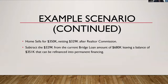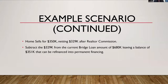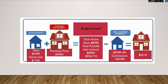After you sell your current home at $350,000, you end up netting, after the Realtor commission, maybe about $329,000. Then you subtract that $329,000 from the current bridge loan amount of $680,000, leaving a balance of about $351,000 that can be refinanced into permanent financing. The next slide is a visual of how that looks.